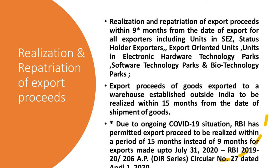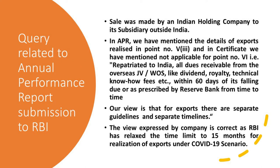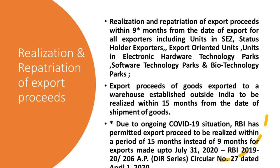Export proceeds of products exported to a warehouse established outside India are to be realized within 15 months from the date of shipment of products. So in all other cases, exports must be realized within 9 months, and in the case of transfer of products to a warehouse situated abroad, it will be 15 months.